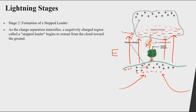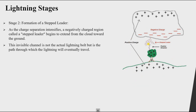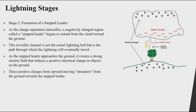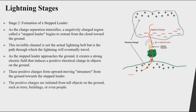The stepped leader is an invisible channel coming from the cloud. At the same time, positive charges from the ground rise through objects like trees, buildings, or people, forming the upward moving positive streamer. The stepped leader comes down and the positive streamer goes up. When these two connect, the lightning strike occurs. Tall objects on the ground are most susceptible since the charges want to combine with each other.